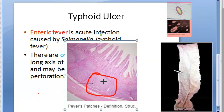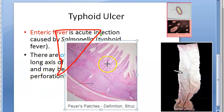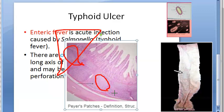The bacilli can also be in the mesenteric lymph nodes, and even in the liver and in the gallbladder. If they are in the liver, they will cause what is called hemorrhagic lymphadenitis. In the gallbladder, they will cause typhoid cholecystitis. In the Peyer's patch, they cause oval typhoid ulcers along the long axis of the bowel.